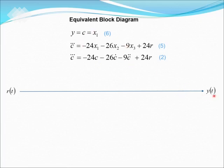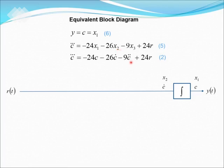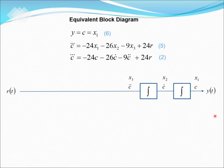From the equation, y equals c equals x1. We can see that we have c, c prime, c double prime, and c triple prime. To produce c from c prime, we integrate once, giving x2. To produce c double prime, we integrate again to get x3. In order to get c triple prime, we integrate once more.